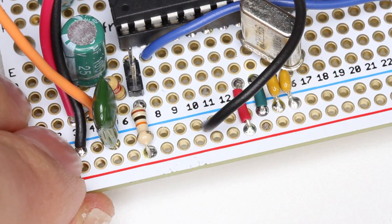Finally, cut and strip a small piece of wire and connect it between pin 5 on the ATmega chip and this hole on the board.